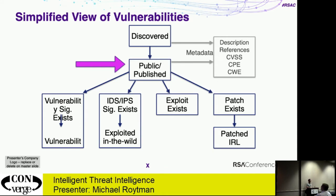Thankfully, the description is not all we have, because the rest of security has spent 20 years creating sensor data. Four events, or four things, can happen to a vulnerability after it's published. They don't have to happen, but they can.